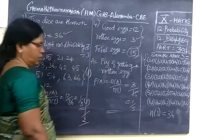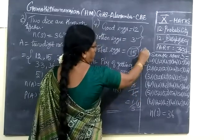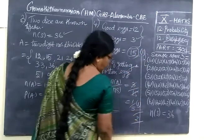So if you cancel it you get 1 by 5. So this also recommended 2 marks for this. For this answer 1 mark, here 1 mark. So totally 2 marks for this.